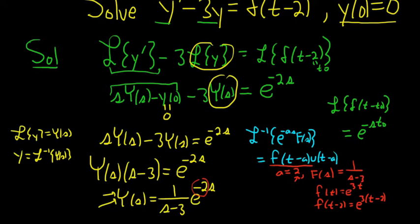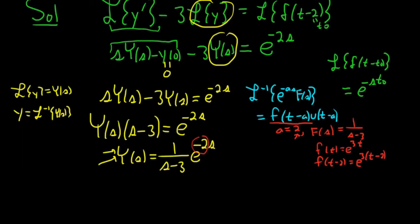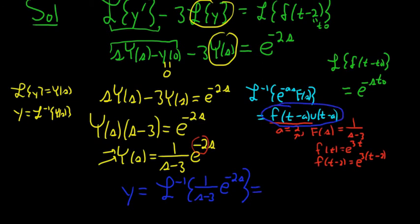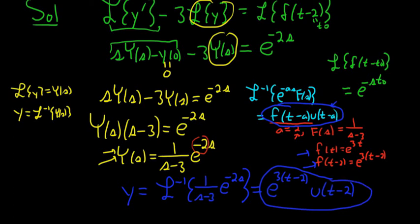So let's finish this. So y is going to be the inverse Laplace of 1 over s minus 3, e to the negative 2s. So using this formula, we know, we worked it out. Little f was this. F of t minus 2 is this. So it's e to the 3t minus 2, and then unit step of t minus 2. And that's the solution to the differential equation.